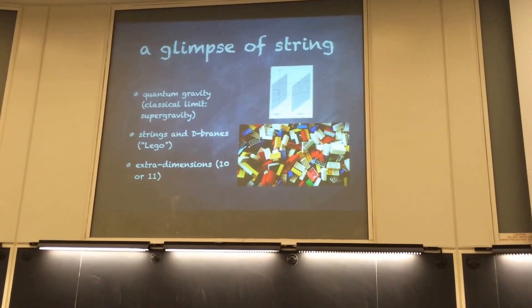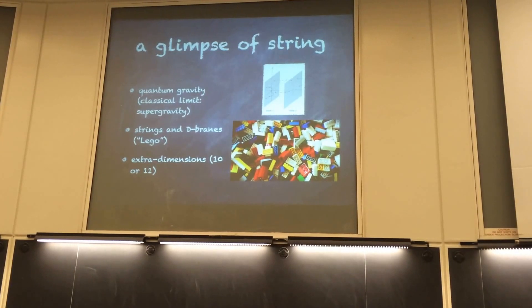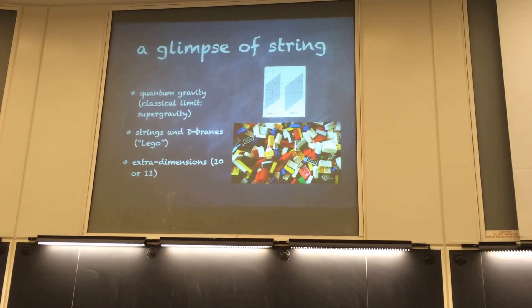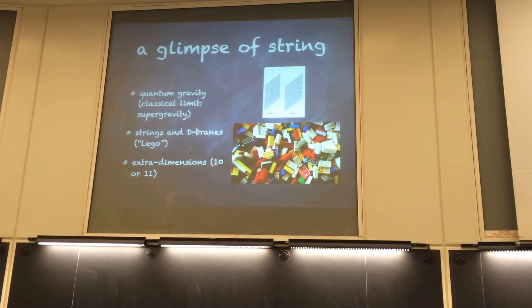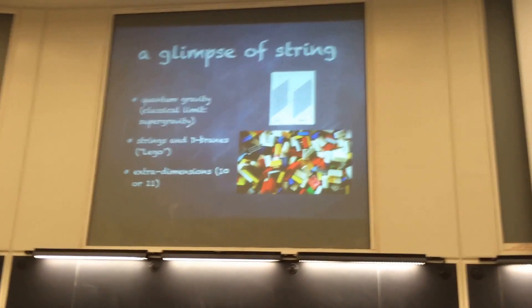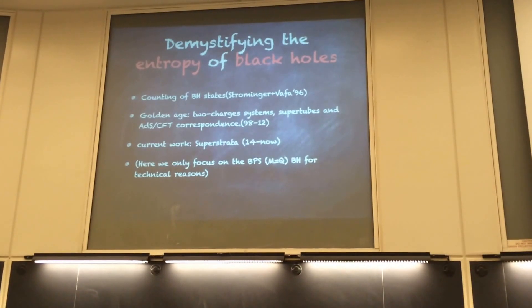String theory is a quantum gravity theory. In the classical limit, it reduces to supergravity. You can think of supergravity as a gravity theory coupled with some gauge theory. In this theory, the content is strings and branes — think of it like Lego. If you know how to play with these strings and branes, you can construct anything you want. To have a consistent quantum string theory, you need ten actual dimensions.